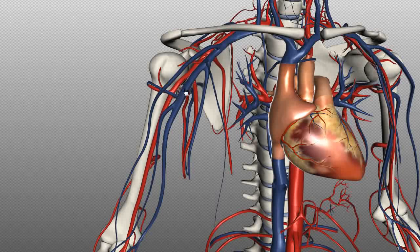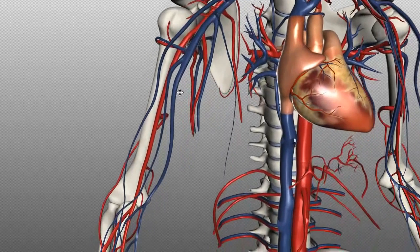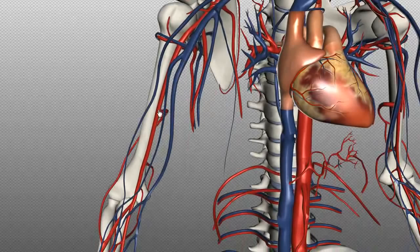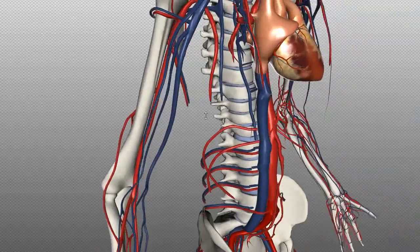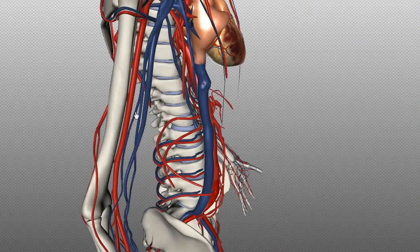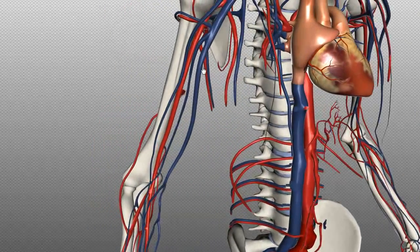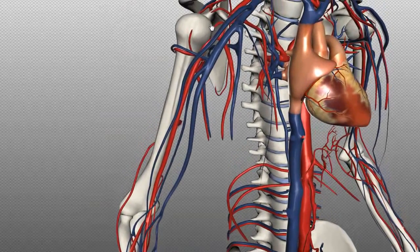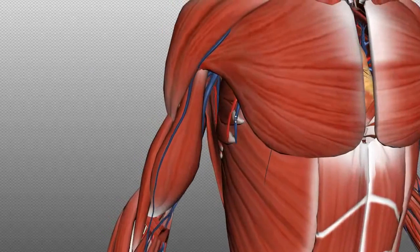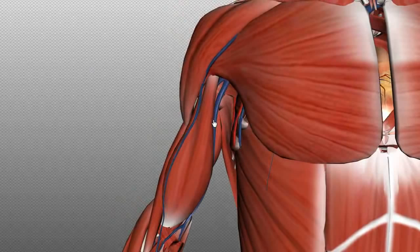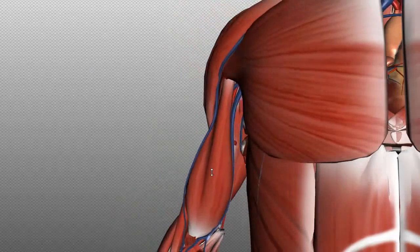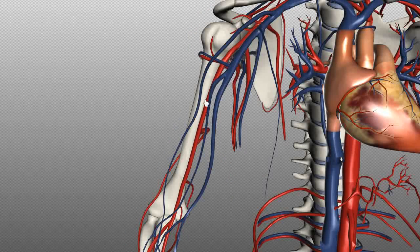Also draining into the axillary vein, you've got two more veins. This middle one is the brachial vein, which is a deep vein. This one here is the basilic vein. Where the brachial and basilic veins meet, you get the axillary vein. The axillary vein runs from there to the point where the cephalic vein drains into it. Putting in the muscle layer, you can see the deep brachial vein, while the basilic vein and cephalic vein are the two superficial veins.